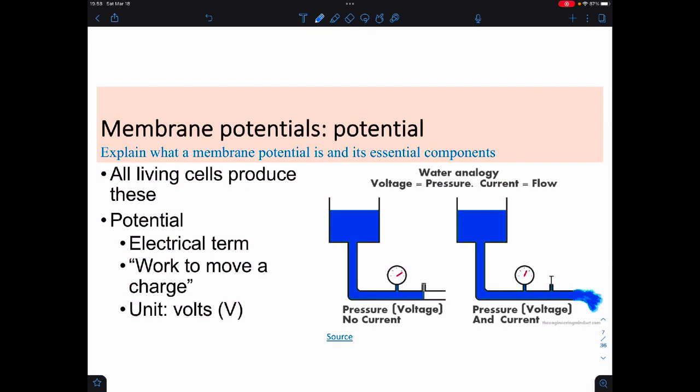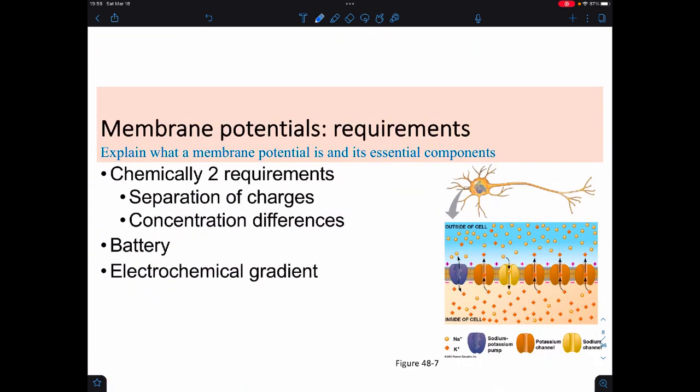Membrane potentials are a universal phenomenon of cells, and it does help if we define the term potential. Potential is a physics word, and it makes reference to work that is able to move charges. The unit that we use is volts for potentials. In particular, we're going to be dealing with millivolts. In order to have a membrane potential, you need to have two things. You must have a separation of charges, and you also must have a difference in concentrations. Sometimes this is the same thing, and sometimes it can be something totally different.